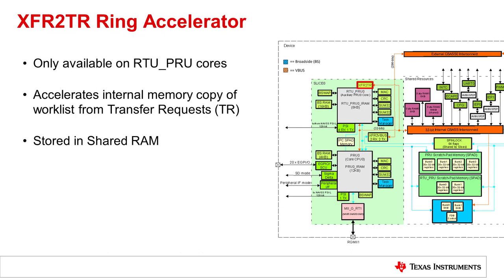The final data movement accelerator is the EXFR to TR ring accelerator. This accelerator is only available on the RTU cores and helps manage a set of transfer requests, or TRs, which are then used by the SoC's ring accelerator to pass packets between a producer and consumer. At a high level, the PRU ICSSG uses the EXFR to TR accelerator to copy predefined TRs into a work list used by the SoC's ring accelerator. Both the predefined TRs and work list are stored in the PRU ICSSG's shared RAM.